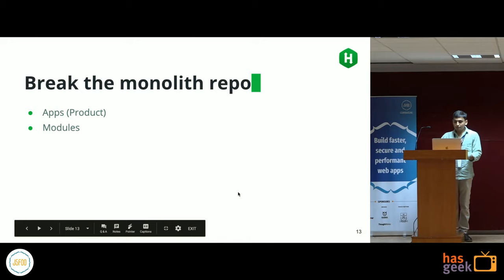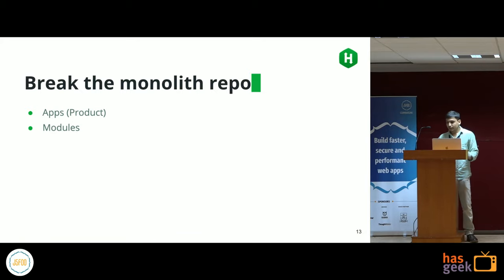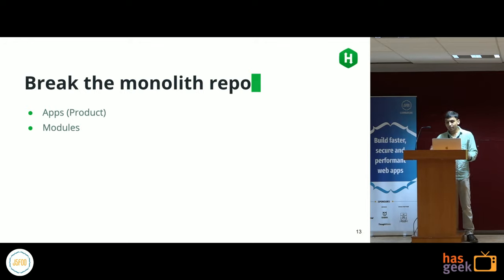We decided to categorize everything into two types: apps — which are all the products — and modules. Products have different deployment and different build pipelines, so this categorization was required. Modules are things added to apps, and apps are the entry points for all the products.